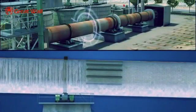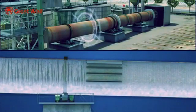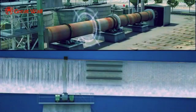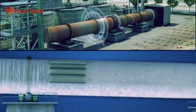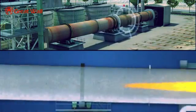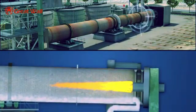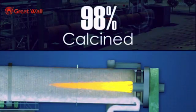The rotation of the kiln stirs the lime mud as it travels to fully expose it to the heat. By the time the lime mud completes its journey to the lower end of the kiln, it is about 98% calcined. The lime is now ready to be reused.